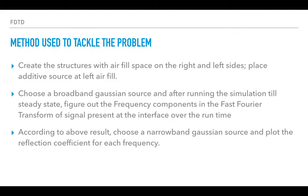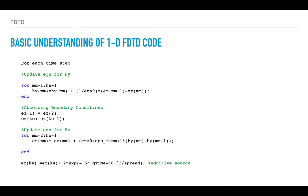Now let's go through the basic understanding of the 1D FDTD code. For each time step we use the update equation for HY, where MM is our iterating variable and i goes from 1 to KE-1. KE is the number of steps we have in space, and here we use a simple assignment operator where recurrent values are added again and again.